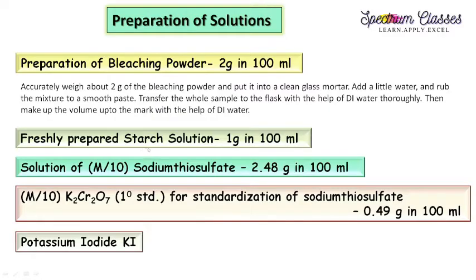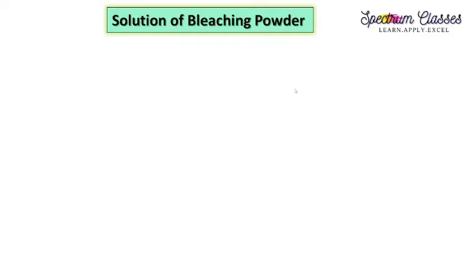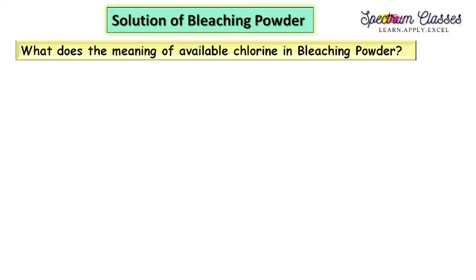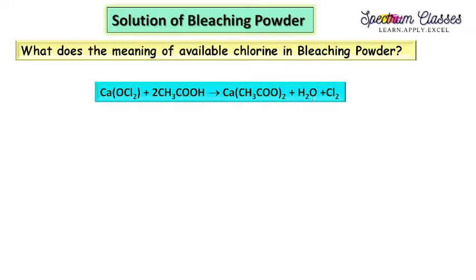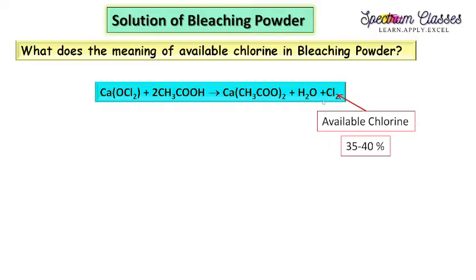Preparation of starch solution, sodium thiosulphate solution, and standardization of sodium thiosulphate — I have already made videos on these three topics and will give the links in the description box. Now, regarding why we call it 'available chlorine': bleaching powder, also known as chlorinated lime, on reaction with acetic acid produces chlorine gas, and this chlorine gas produced is known as available chlorine, which varies from 35 to 40 percent.